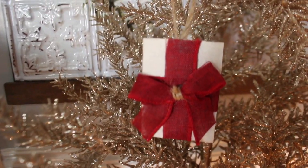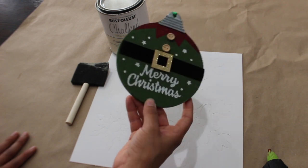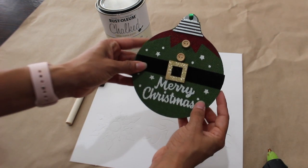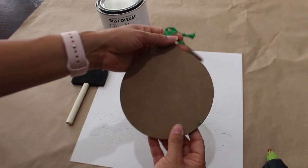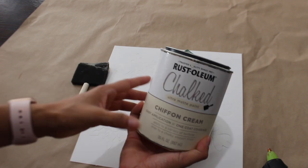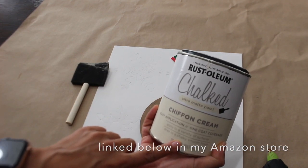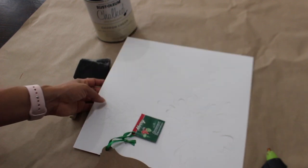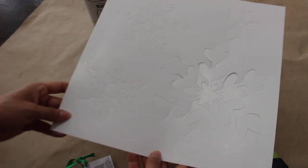For the second DIY, I have this Dollar Tree ornament. It's a pretty nice size circle. I'm going to turn it around and I am painting this with my Chiffon Cream Rust-Oleum chalk paint. This is such a pretty color. What I'm going to be making is a snowflake ornament. I have a pack of stencils from Walmart.